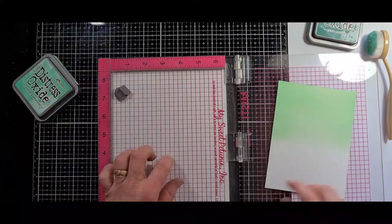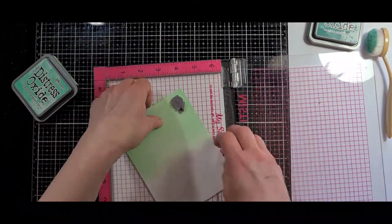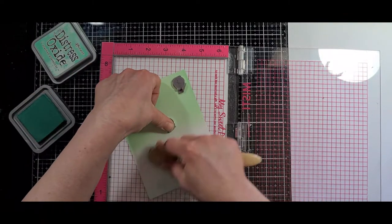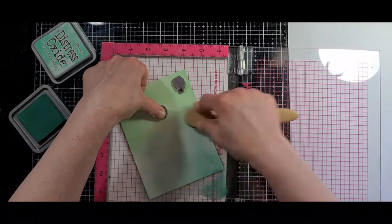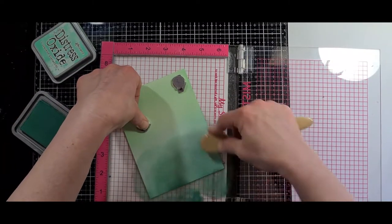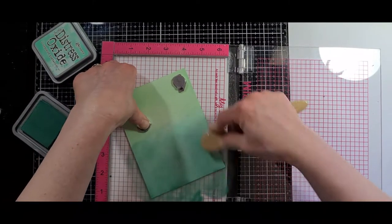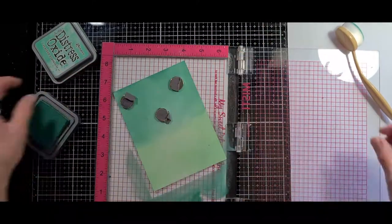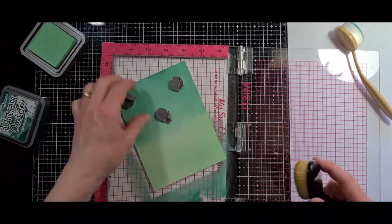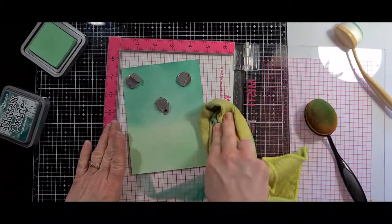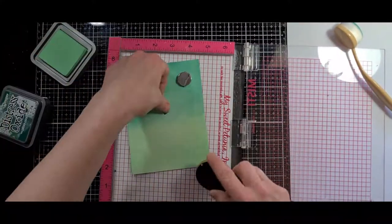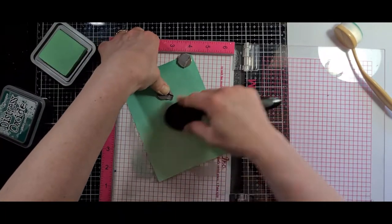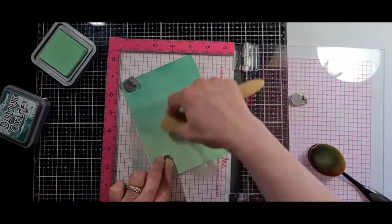So to start with my first one, I grabbed two different colors of Distress Oxide inks. One is Cracked Pistachio and the other one is Pine Needles. And I just went in with the two different colors starting on either side, blending in towards the middle until I had a nice soft transitional blend of the two colors. I wasn't too concerned if it wasn't a completely perfect blend, because I was going to be going back over them with the stencils in the end.